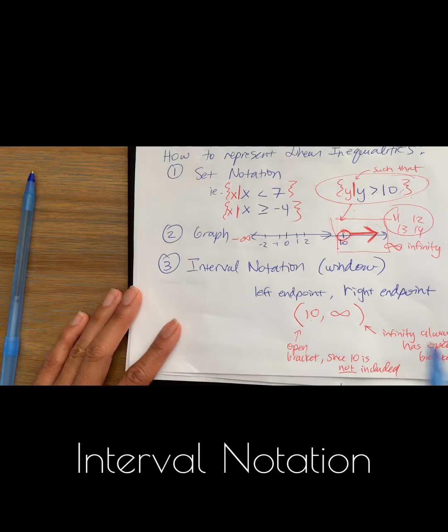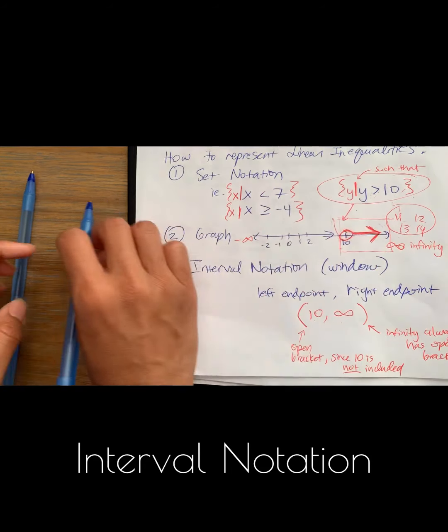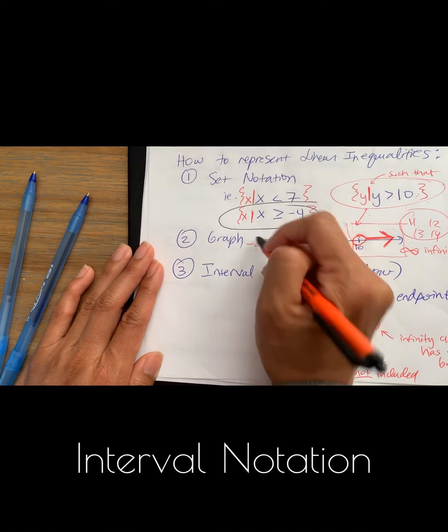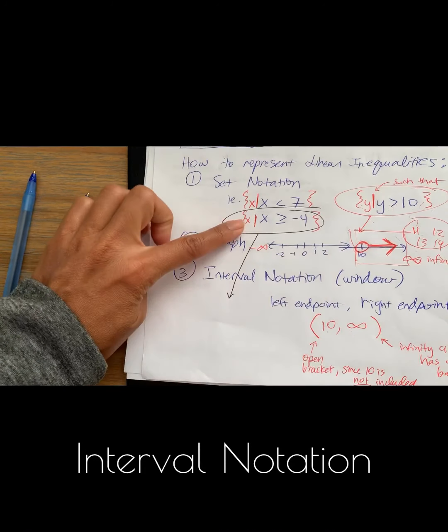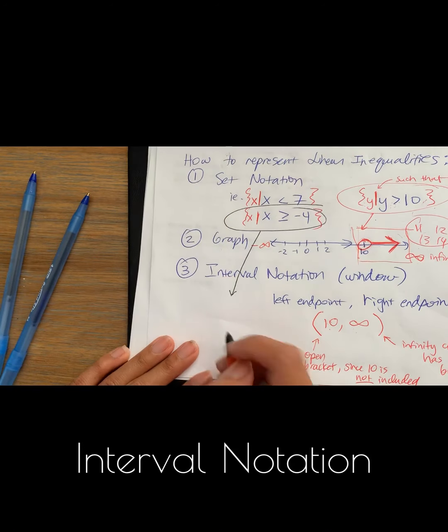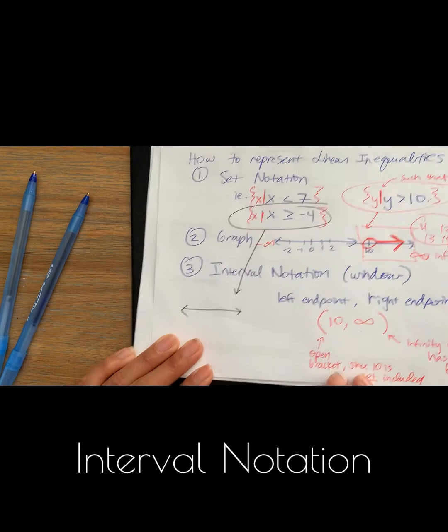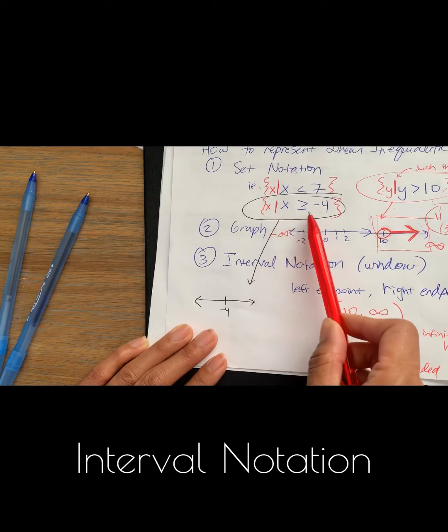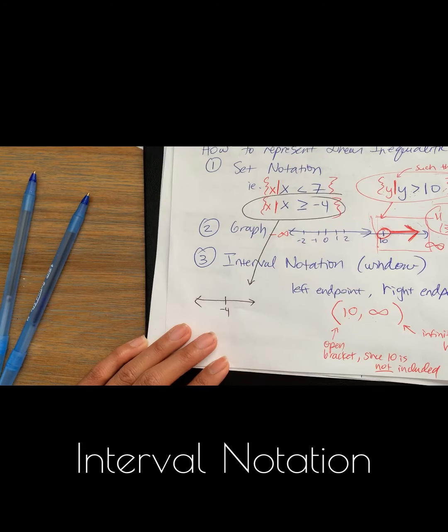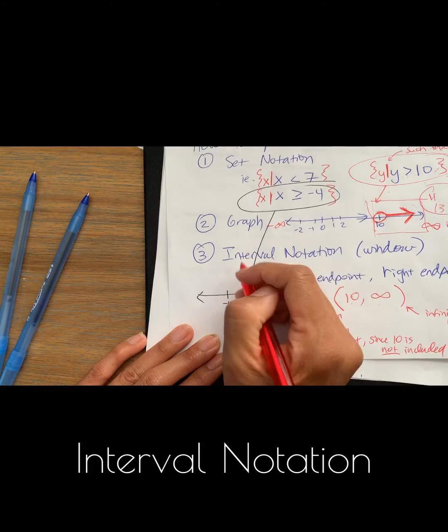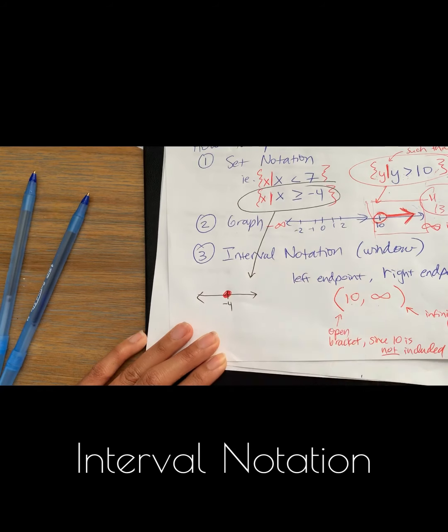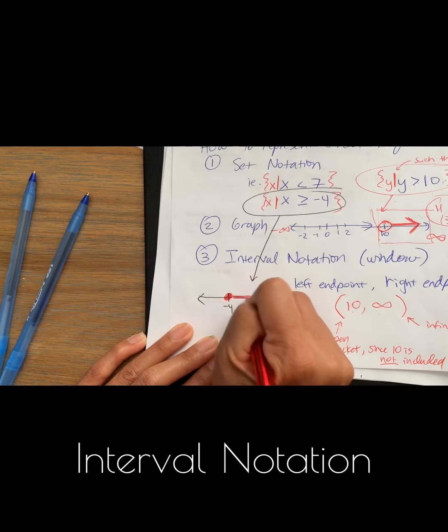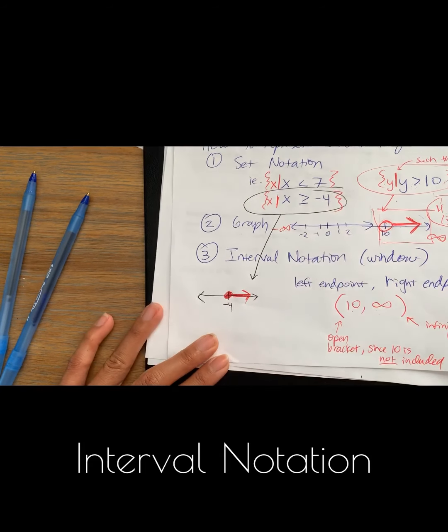Now what if I had said, let's go ahead and write this one in interval notation. If I wanted to write this in interval notation, first I'm going to graph it just so I could visually see it. I have negative 4, and it says x is greater than or equal to negative 4. So I'm going to do a solid circle at negative 4, because it's greater than or equal to, and I'm going to point to the right, because those are the numbers that are bigger than negative 4.